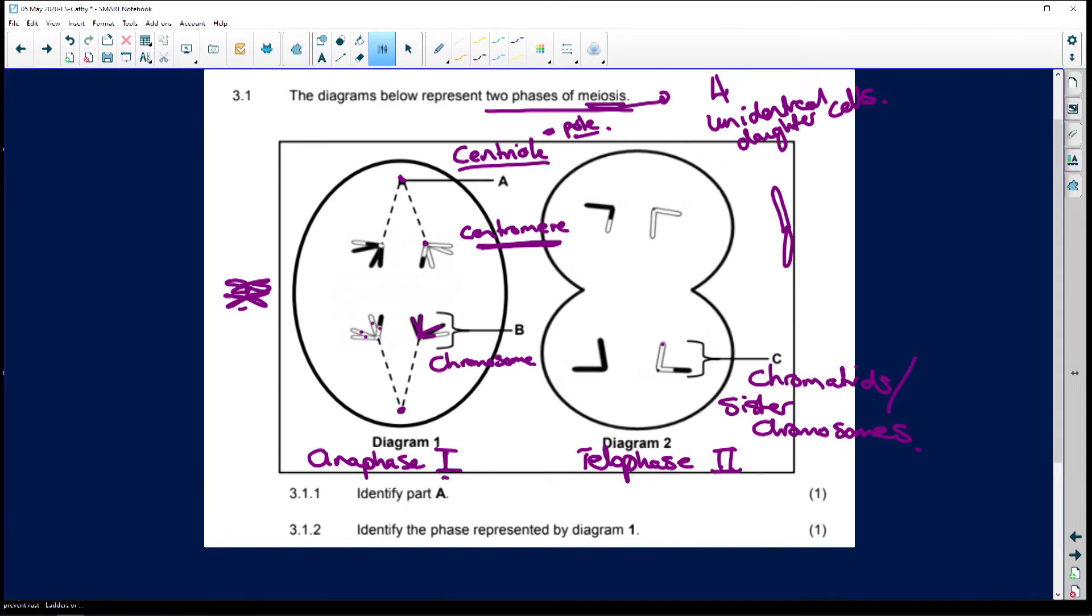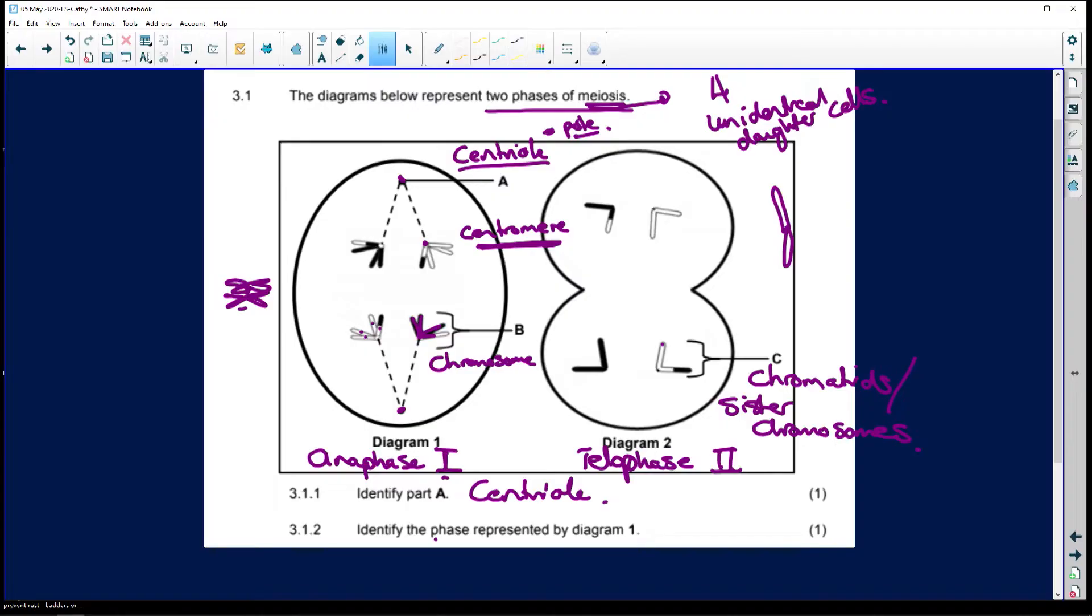Identify part A. Easy peasy. It's the centriole. And remember, why do we fill in all the labels? We fill them in because it helps our brain to figure out which question we are going to be working through and what topic we're working through so that you access that information quickly and easily.